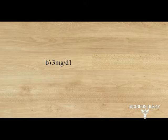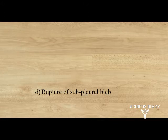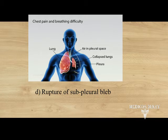Next one: commonest cause of spontaneous pneumothorax is — option A. TB, B. trauma, C. asthma, D. rupture of sub-pleural bleb. Answer: rupture of a small sub-pleural emphysematous bleb. Pneumothorax is the presence of air in the pleural space. It occurs almost exclusively in smokers, which suggests that the patient has subclinical lung disease. If recurrent attacks are present, thoracotomy is done.